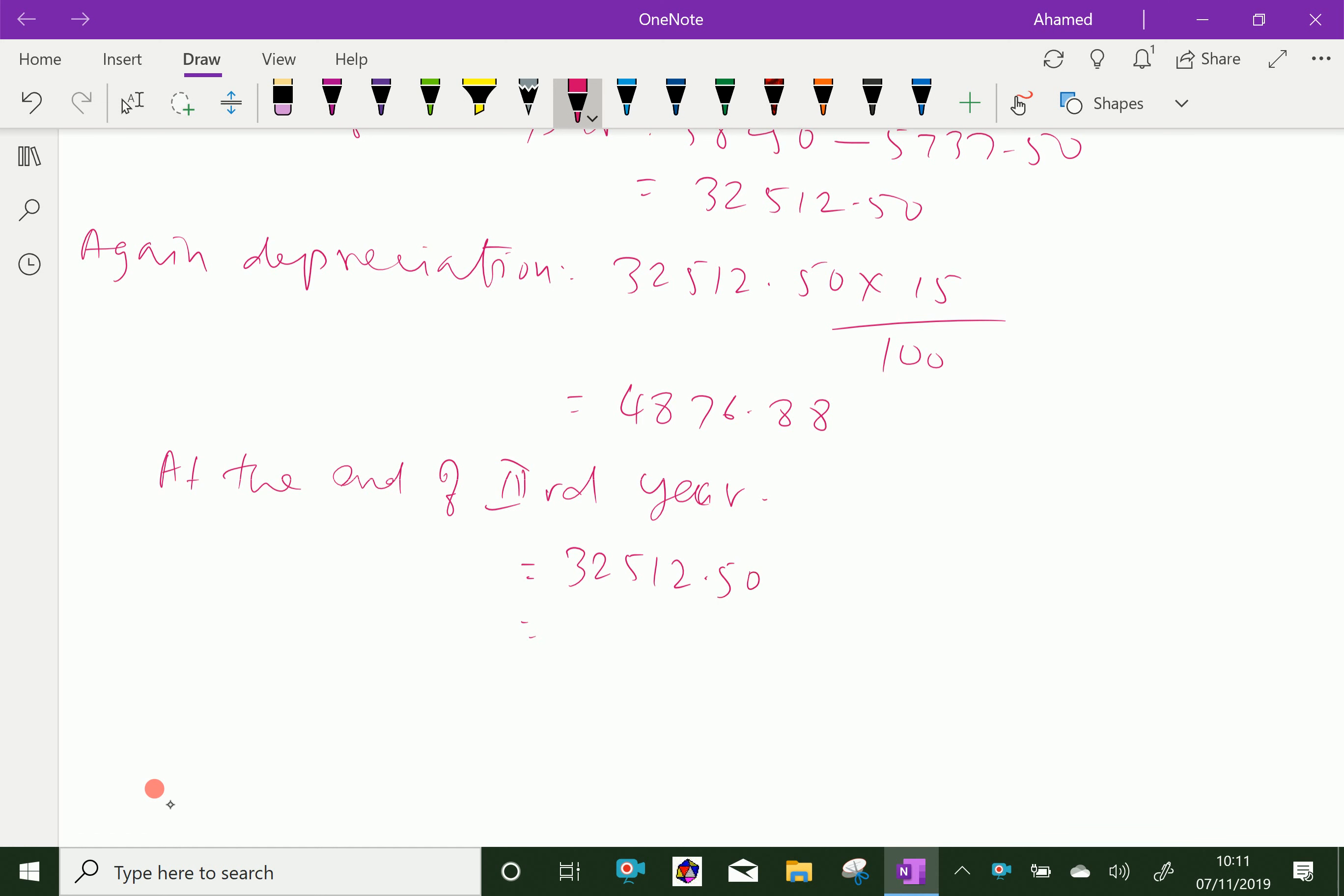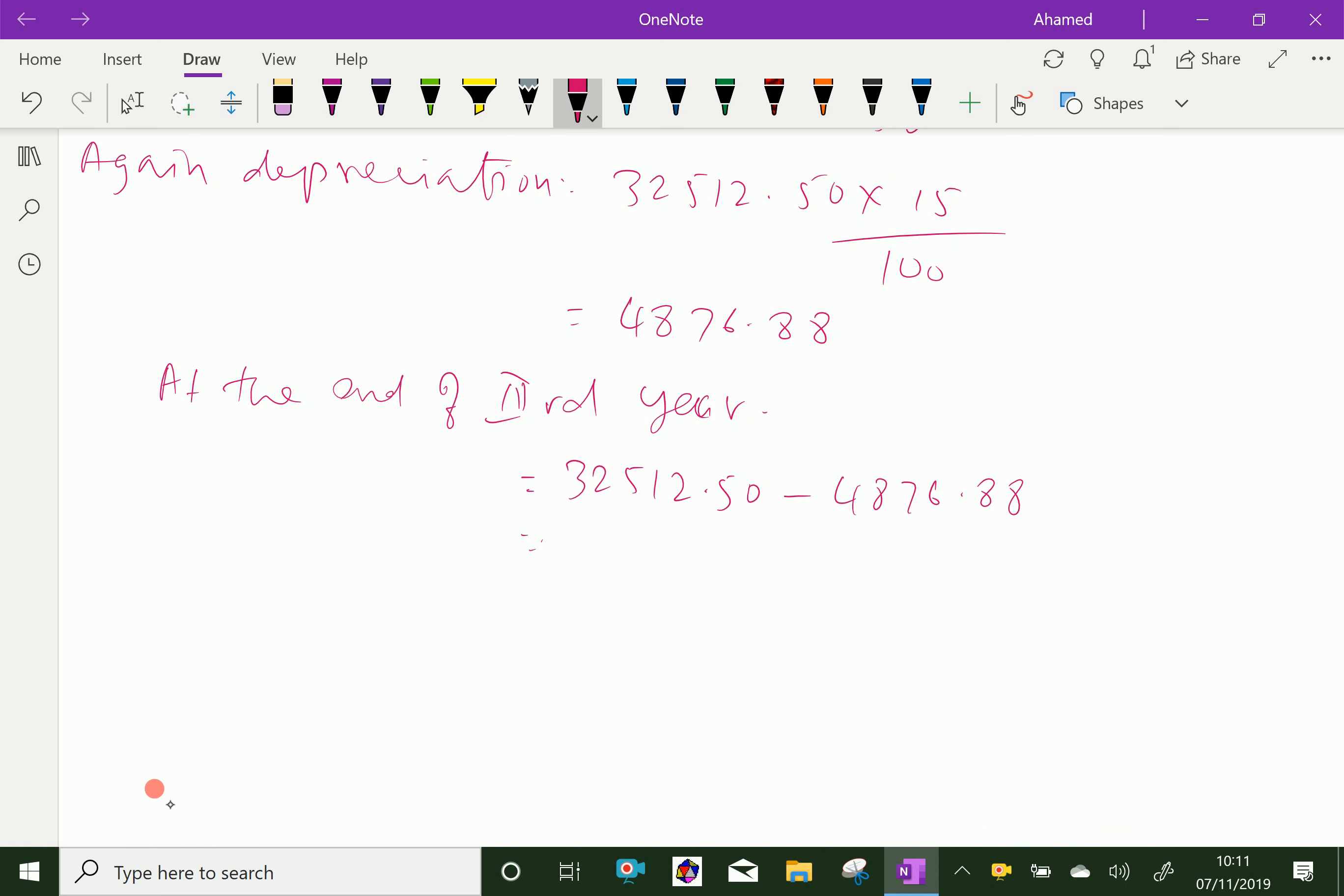32,512 minus 4,876.88, by calculation it gives 27,635.63, which is approximately ₹27,636.